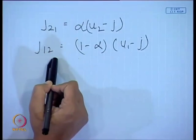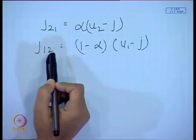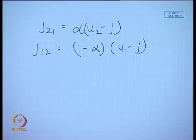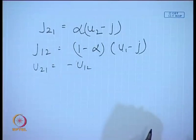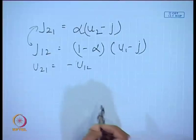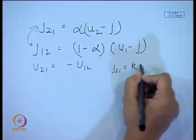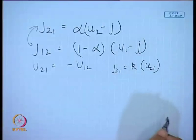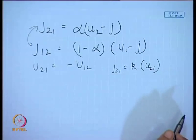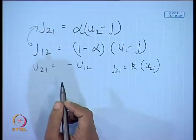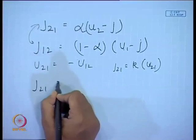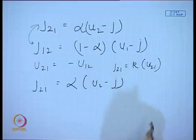We would like to obtain expressions relating the drift flux and the relative velocity. We would also like to see the relationship between j₂₁ and j₁₂ — just as for relative velocity we know u₂₁ = −u₁₂. We would also like to find how j₂₁ is related to the relative velocity u₂₁. Let us start from the basic definition: j₂₁ = alpha·u₂ − alpha·j.